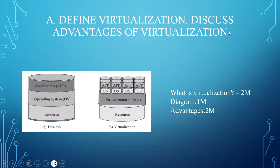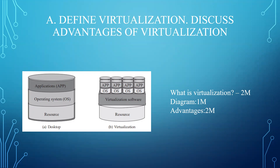Define virtualization, discuss advantages of virtualization. The definition of virtualization will contain 2 marks. You can draw a diagram for the definition of virtualization showing the difference between a normal desktop and a virtualization system — that diagram consists of 1 mark. The advantages can be listed down and each advantage explained, which will be 2 marks. Totally it is 5 marks.